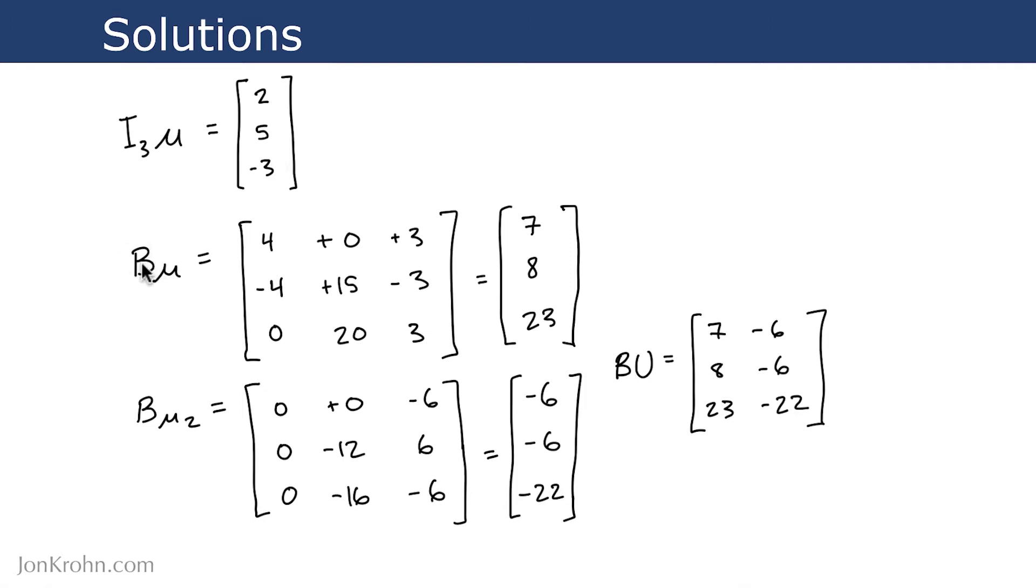The matrix B applied to the vector u gives us this result. And therefore, the application of B to the matrix u, which is the concatenation of u and u2, comes out to this here. If all of that moved a bit quickly, don't worry. Right now we're going to break it down even more.